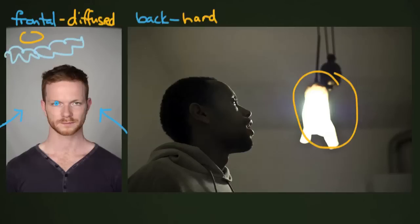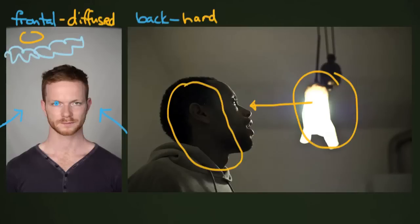Over here you have one light source that's just really close to Joseph — just a few feet or a few meters away. And it's hitting his face and bouncing off, causing a really high contrast. His ear and the side of his face is all in shadow, his shoulder is all in shadow, and then just certain parts of it are being hit by that light.